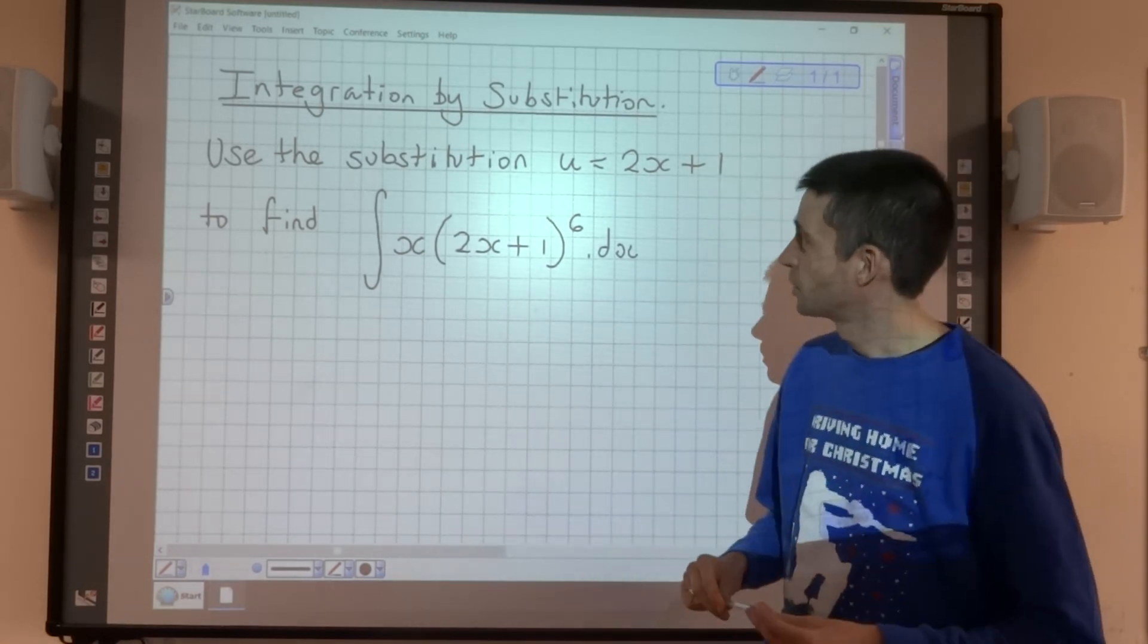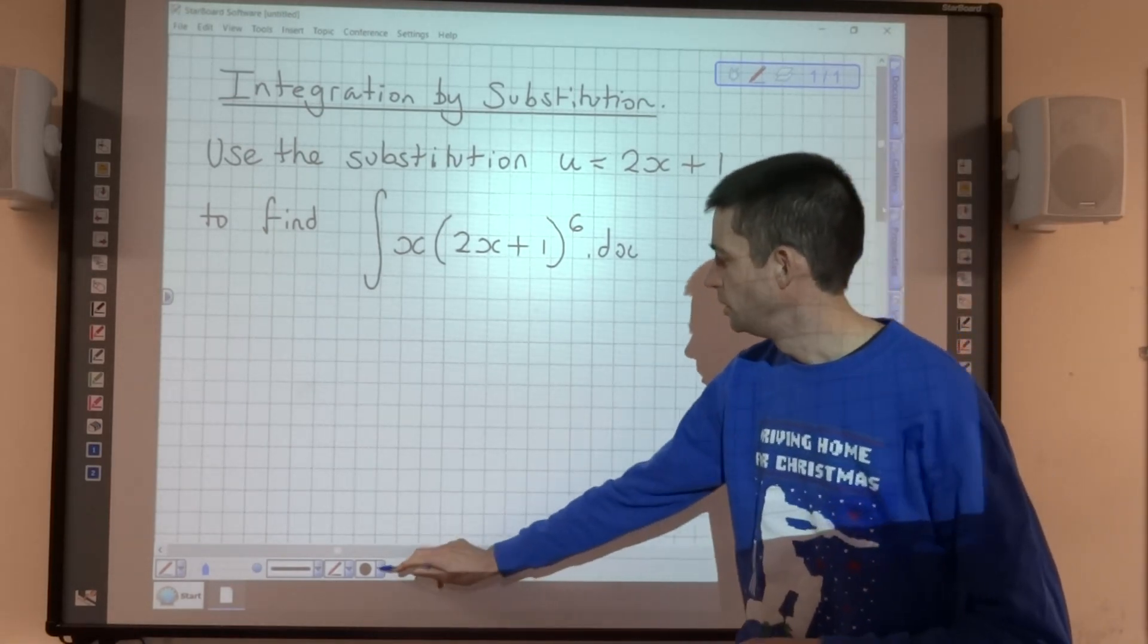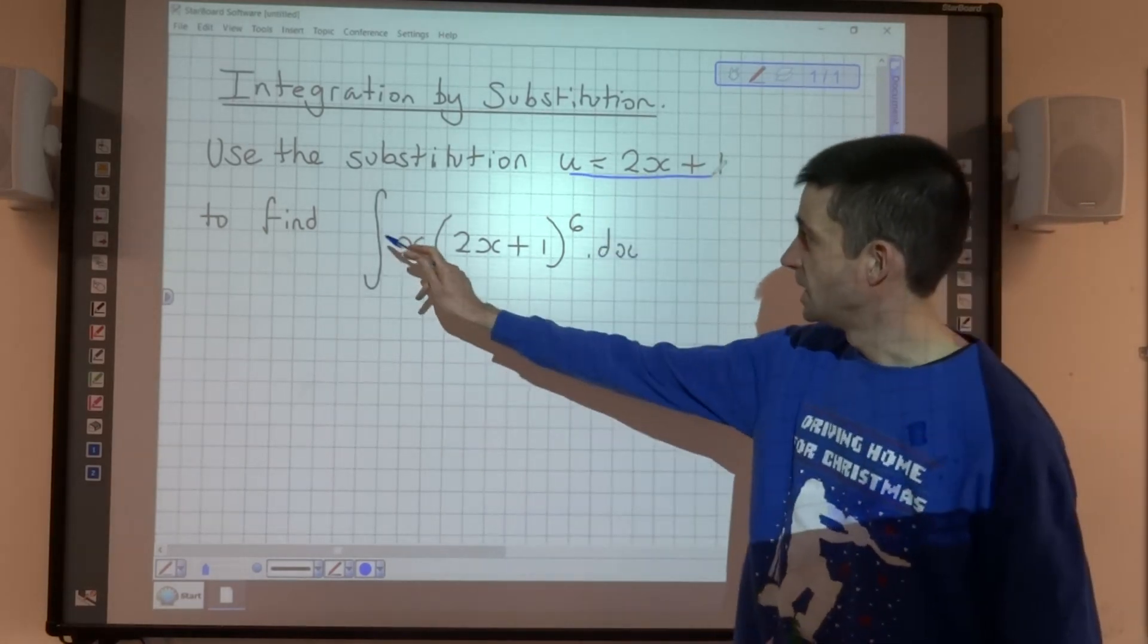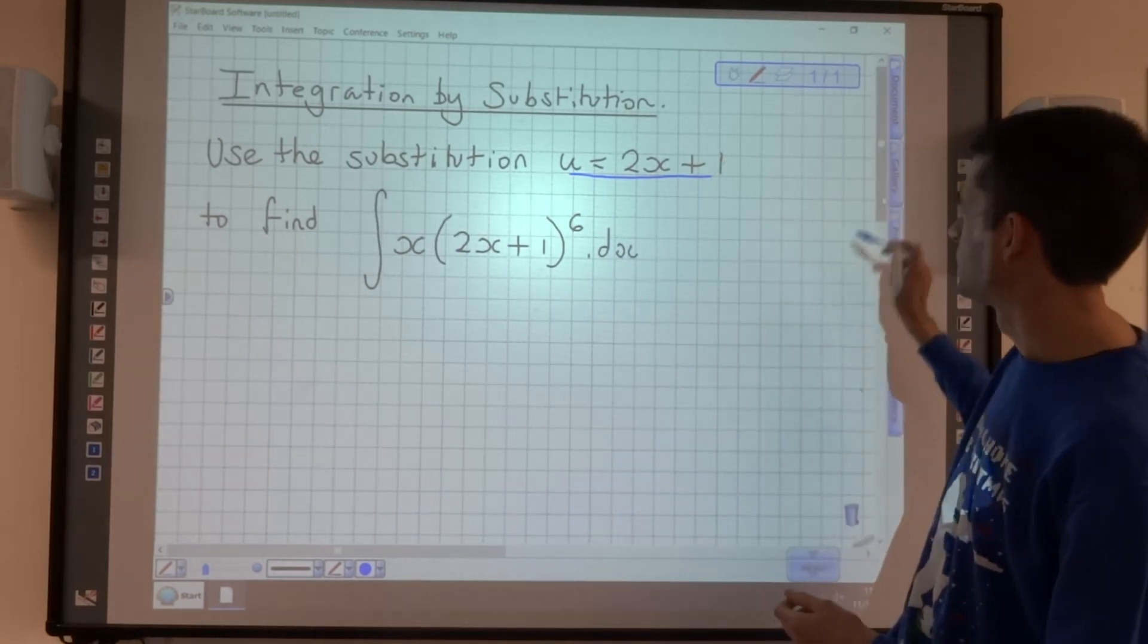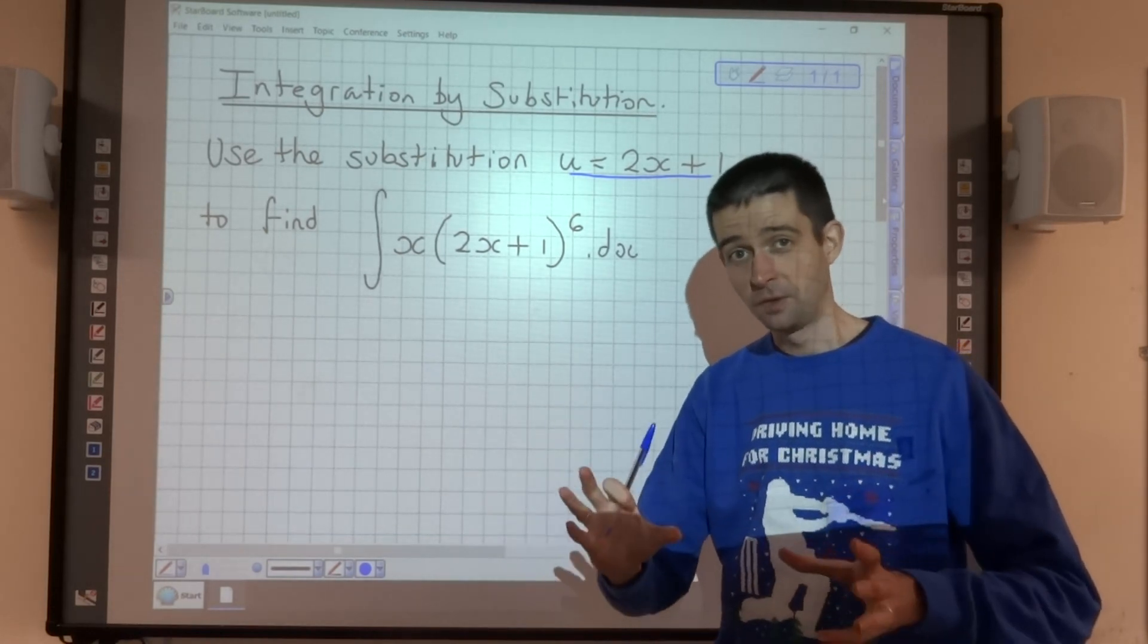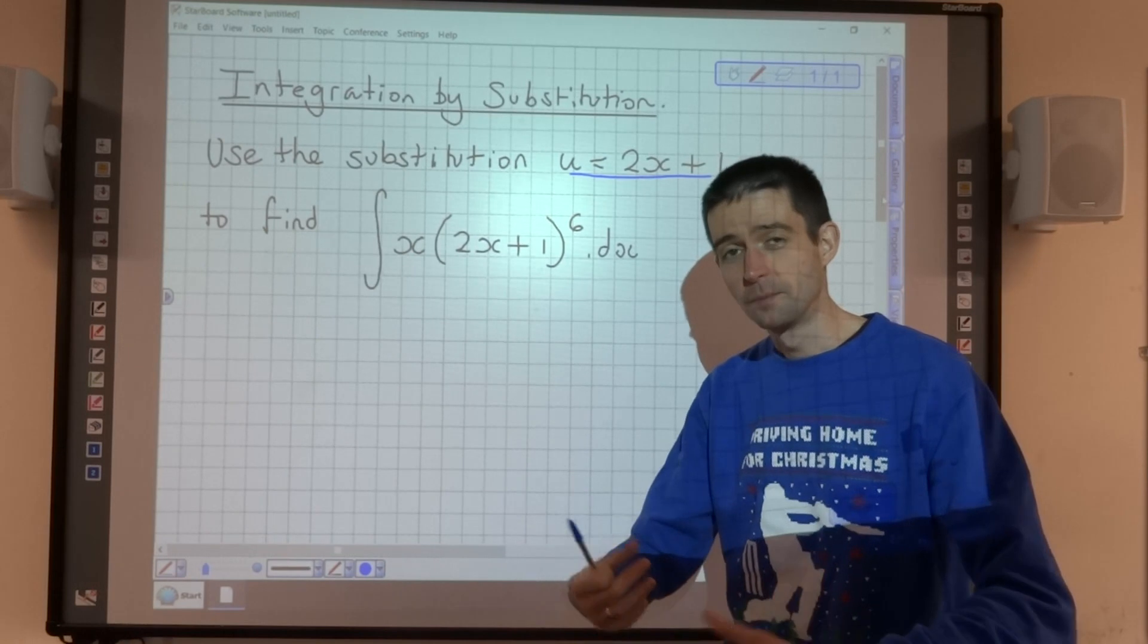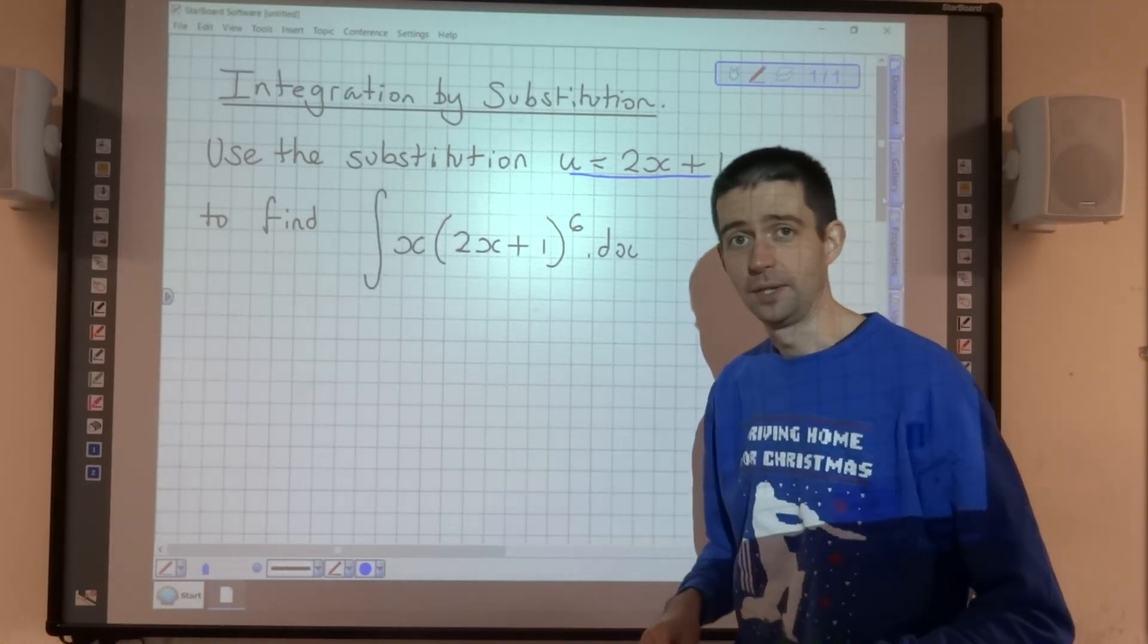OK, so here we go then. Integration by substitution. We're being asked to use the substitution u equals 2x plus 1 to find the integral of x times 2x plus 1 to the power of 6 with respect to x. So the purpose of integration by substitution is to take something that's difficult to integrate, manipulate it so that it's something more straightforward, and then integrate that instead.